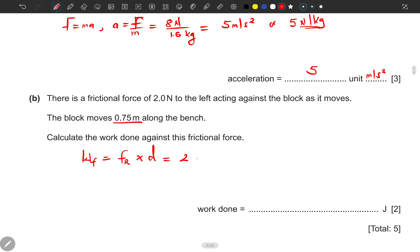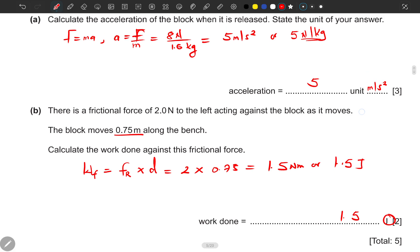So here we have the friction force which is 2 newtons multiplied by 0.75, and of course this should be 1.5 newton meters, or 1.5 joules. So just put 1.5—the J is already there. That's all.